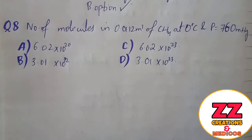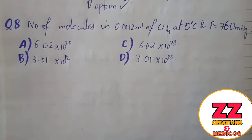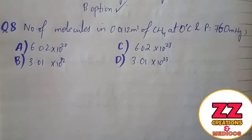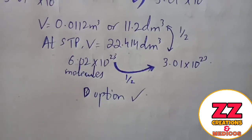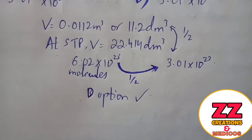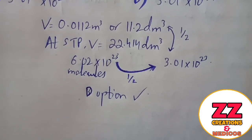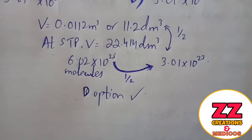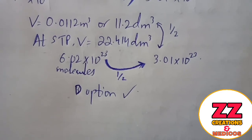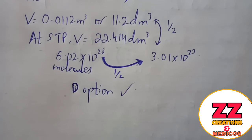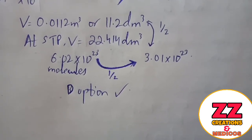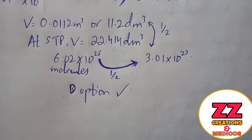Next question: Find the number of molecules in 0.012 cubic meters of methane at 0 degrees Celsius and 760 mmHg pressure. The volume 0.012 m³ equals 11.2 dm³. At STP, molar volume is 22.414 dm³, so 11.2 dm³ is approximately half a mole. Since one mole contains 6.02 × 10²³ molecules, half a mole gives 3.01 × 10²³ molecules. Option B is correct.